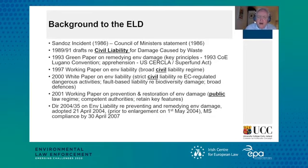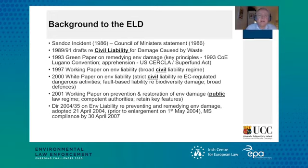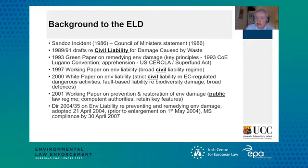We can date the origins of the directive as a legislative initiative back to 1986, in the wake of the Sandoz incident — the pollution of the Rhine by a fire in a chemical factory in Switzerland — and the EC Council of Ministers issued a statement in 1986. That in turn led to the development of two draft directives on civil liability for damage caused by waste in 1989 and 1991. That was then expanded out to all damage caused by waste.